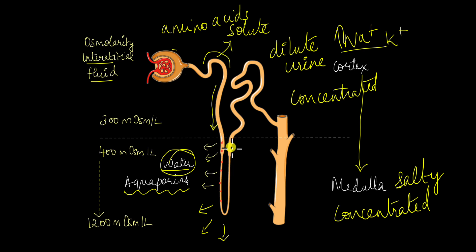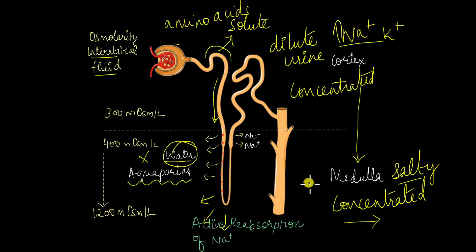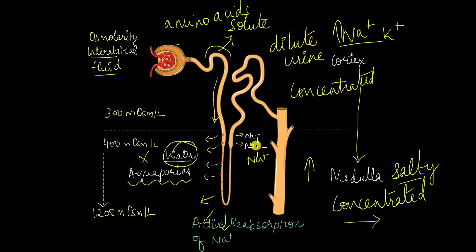Next, the filtrate moves up to the ascending limb of the loop of Henle. The ascending limb is reverse in terms of permeability — it is permeable to sodium but not to water. The medulla is highly concentrated and salty. But comparing the concentration of solutes in the ascending limb filtrate and the interstitial space, the interstitial space has more electrolytes. In spite of this, sodium is actively reabsorbed at the ascending limb, meaning sodium is moved against its concentration gradient from the ascending limb into the interstitial space.